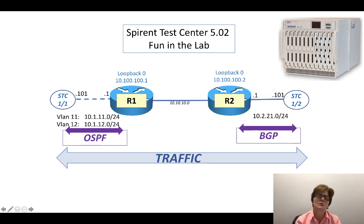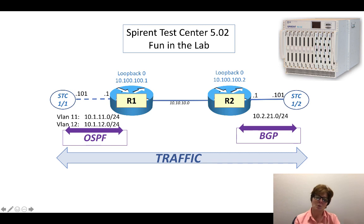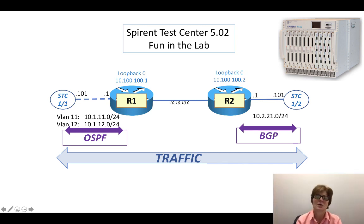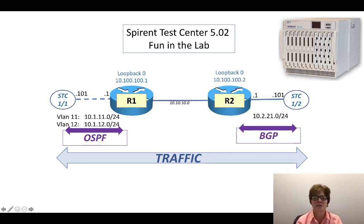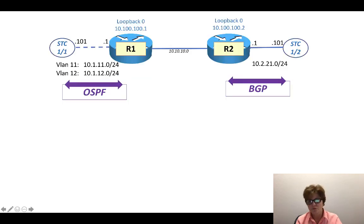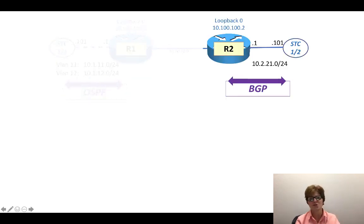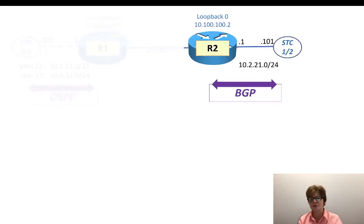This is part of a larger example where we first do one YouTube between Router1 and the Spirent Test Center port for OSPF, and then this specific one, BGP, between Router2 and the Spirent Test Center, and then we'll finish the example with the traffic. So for this one we're going to focus just on the BGP.